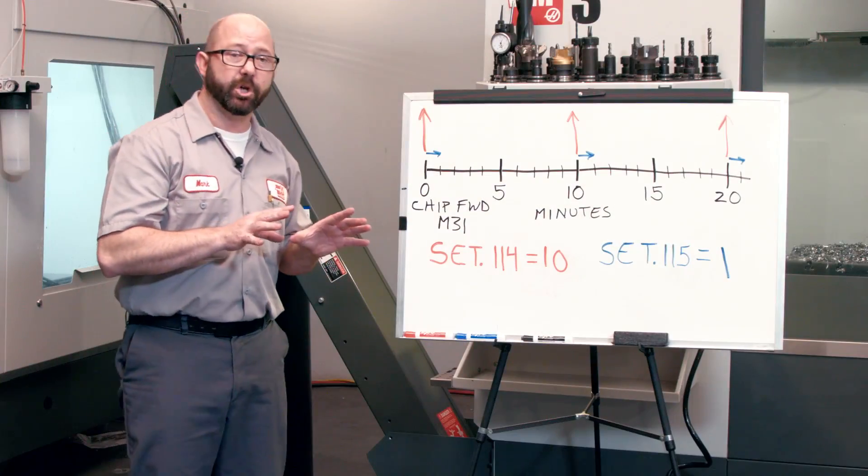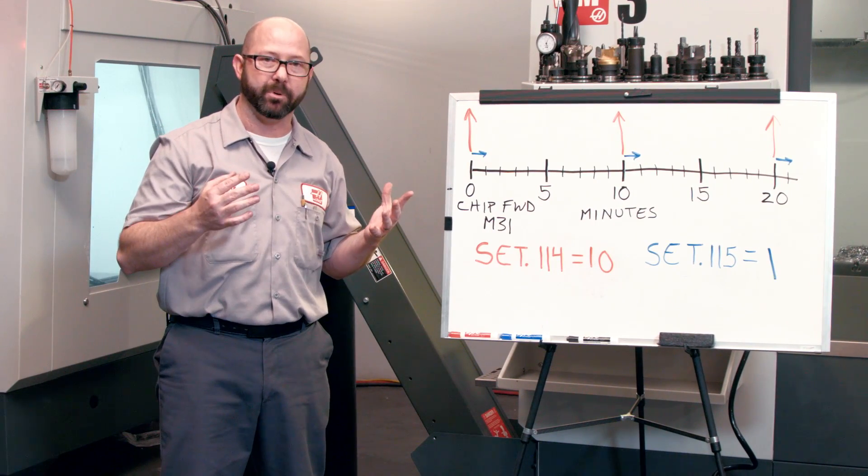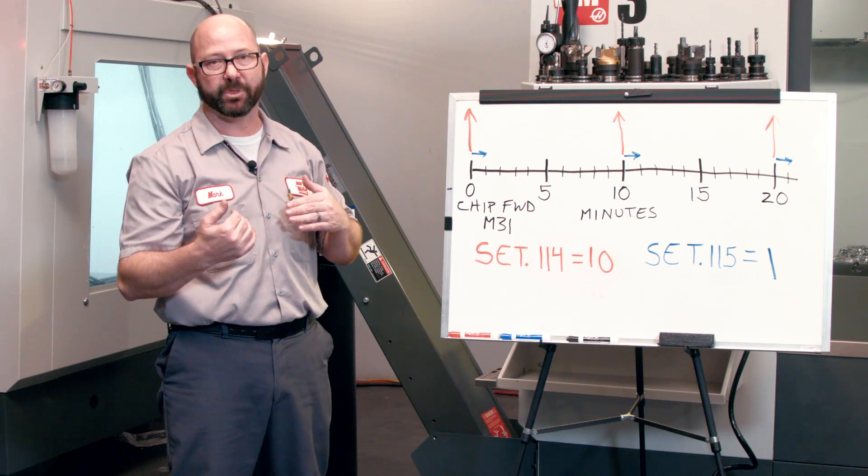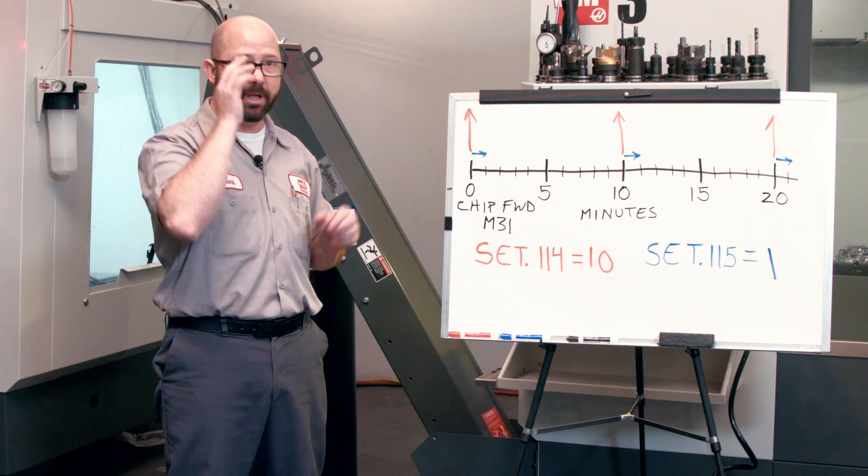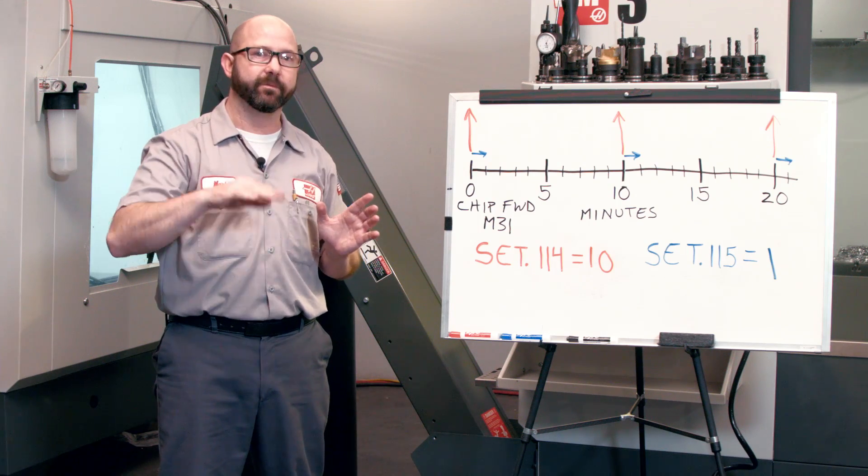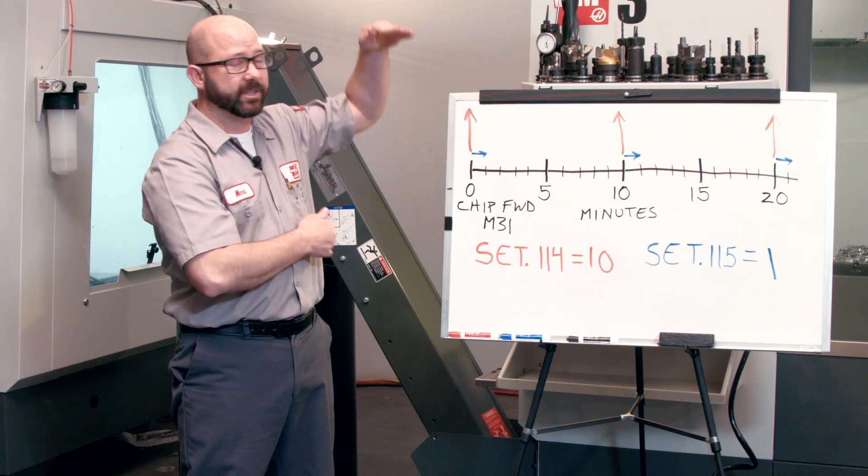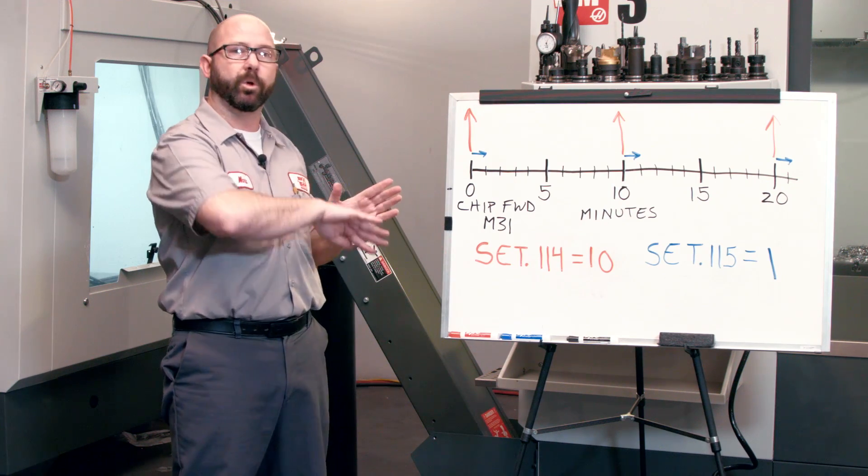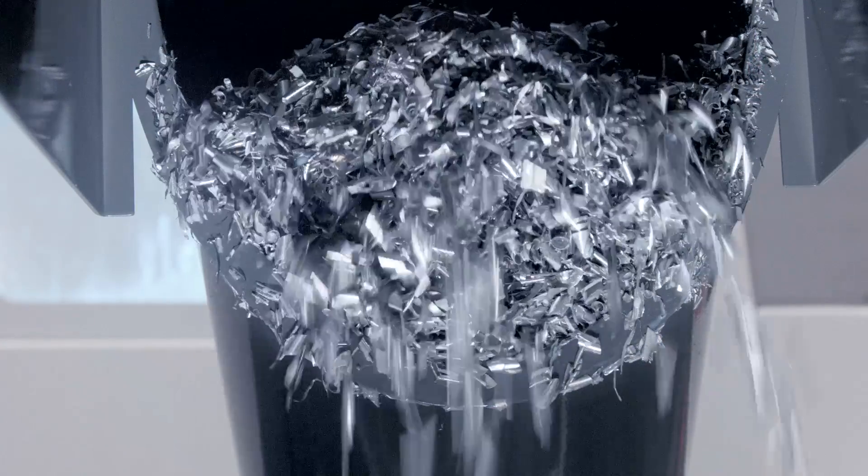Again, what we'd want to do is put an M31 in our program, right at the top of our program. And we don't have to turn it on and off, on with an M31, off with an M33, over and over from within our program to get this benefit. The control will cycle the conveyor on and off for us, right? Put one M31 at the top of your program, even if it's an hour-long program. Then the machine will cycle the conveyor on for one minute every ten minutes with these settings, without us having to do anything.